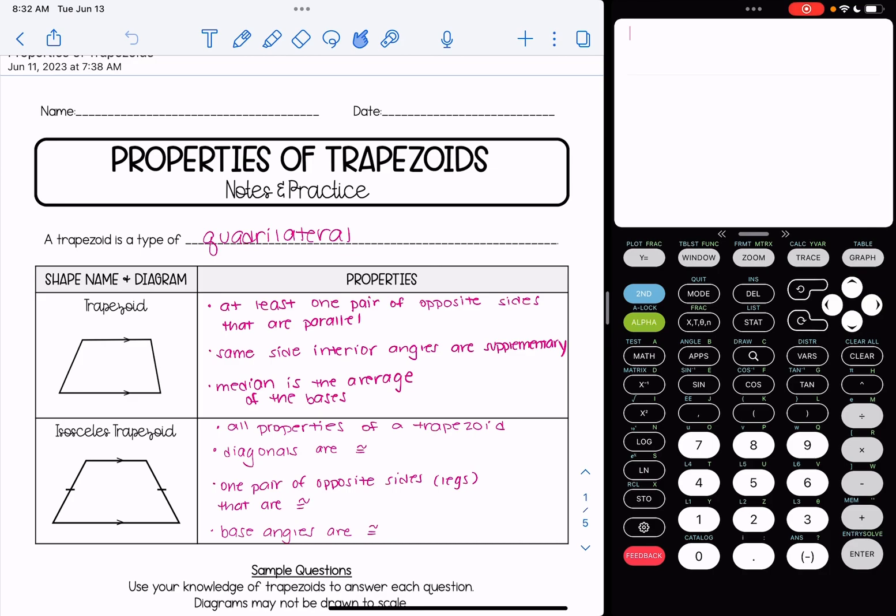So a trapezoid is a type of quadrilateral, which means that it inherits the properties of a general quadrilateral. That means it has four sides and the sum of the interior angles is 360 degrees.